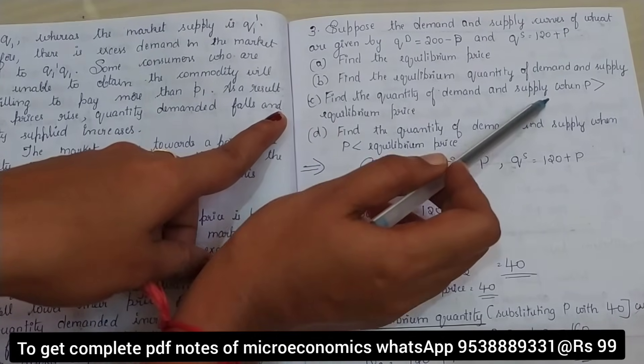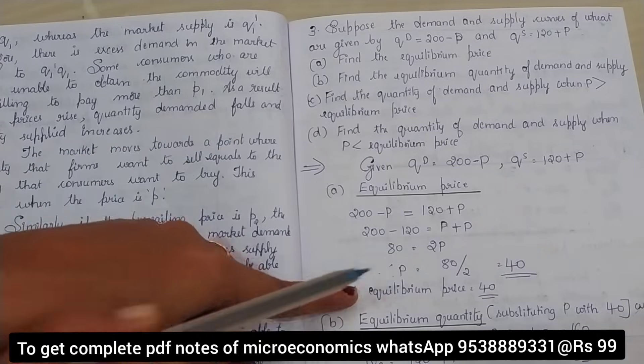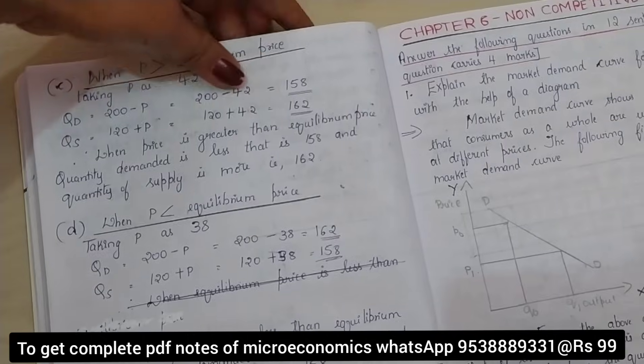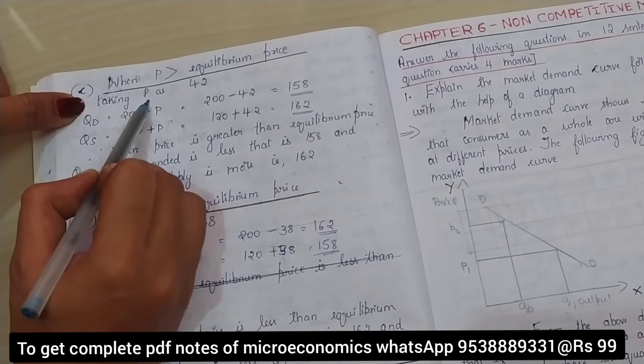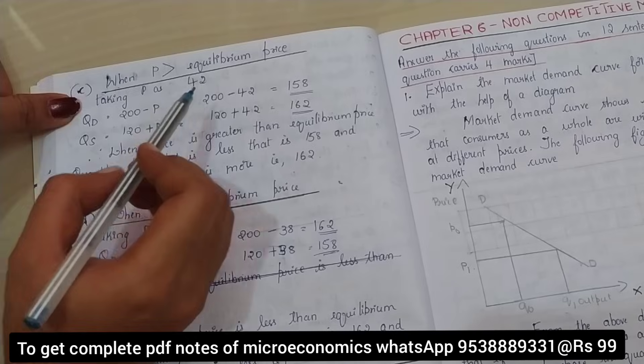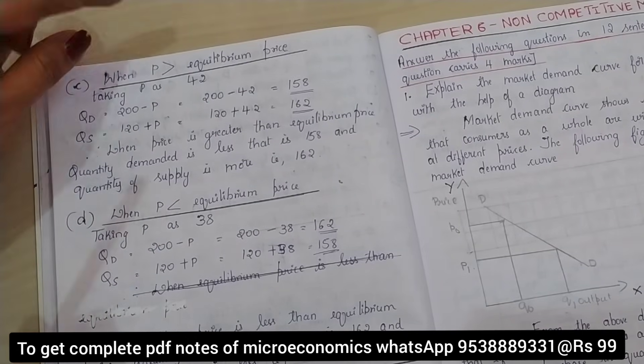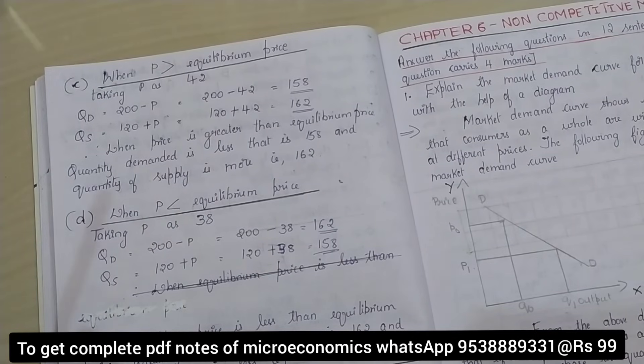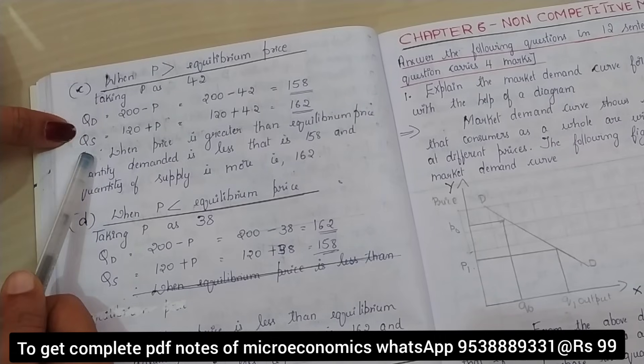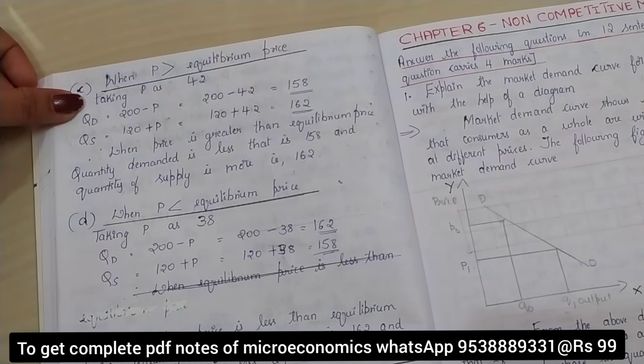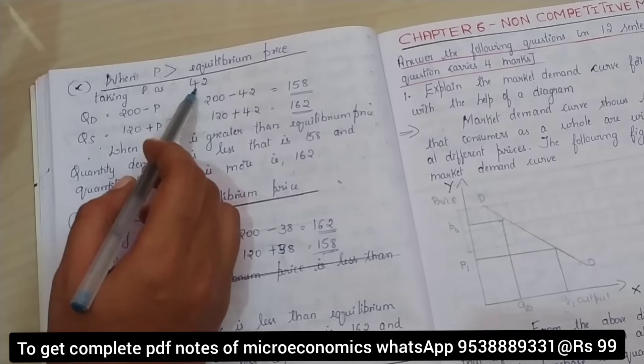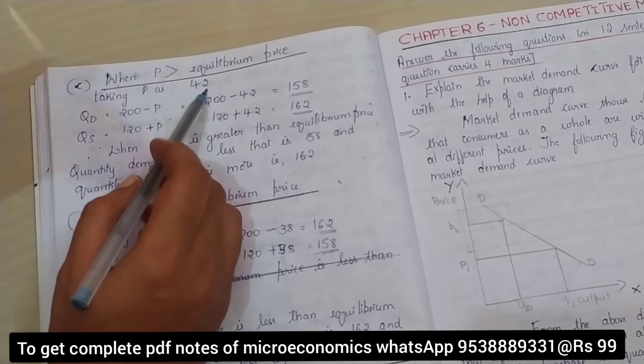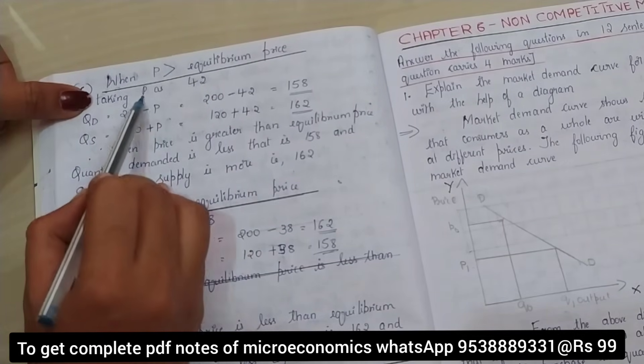Now we shall move to the third question: find the quantity of demand and supply when price is greater than equilibrium price. How will we solve this? Equilibrium price is 40. Now, we have to take a value higher than 40. You can take 43, 44, 45 also. We are taking a smaller value, so I am taking P as 42.